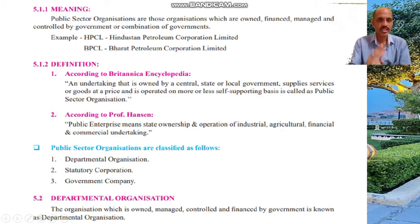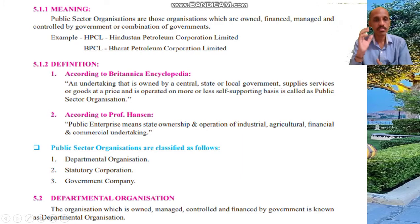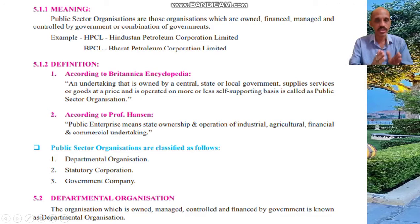I think the second definition is easier. Always write the definition in double inverted commas. Public enterprise means state ownership and operation of industrial, agricultural, financial, and commercial undertakings.